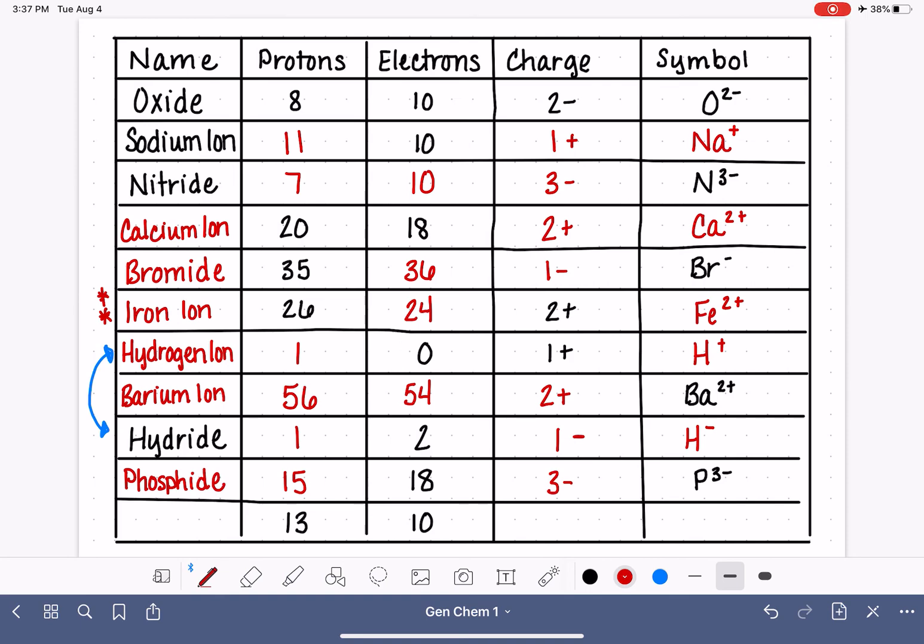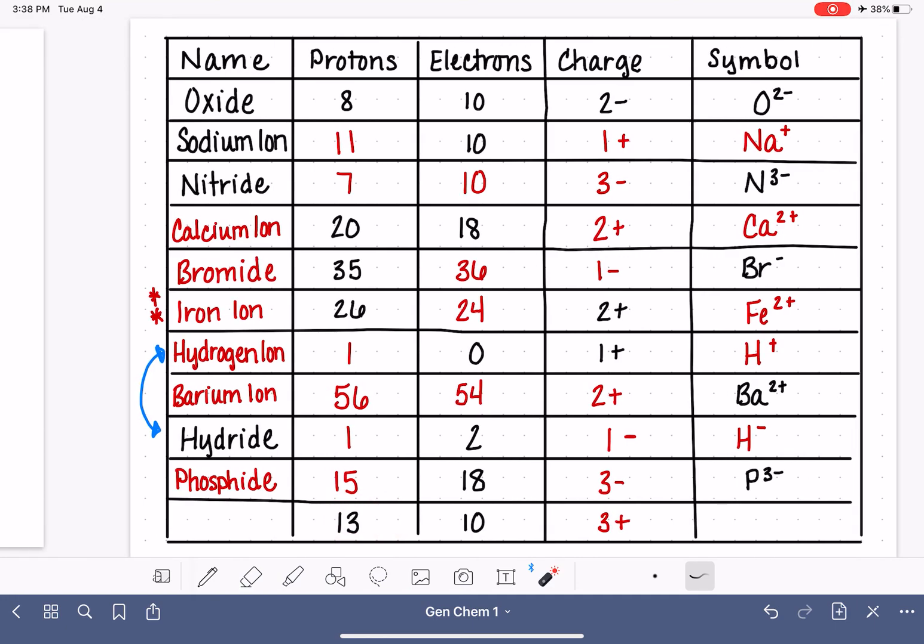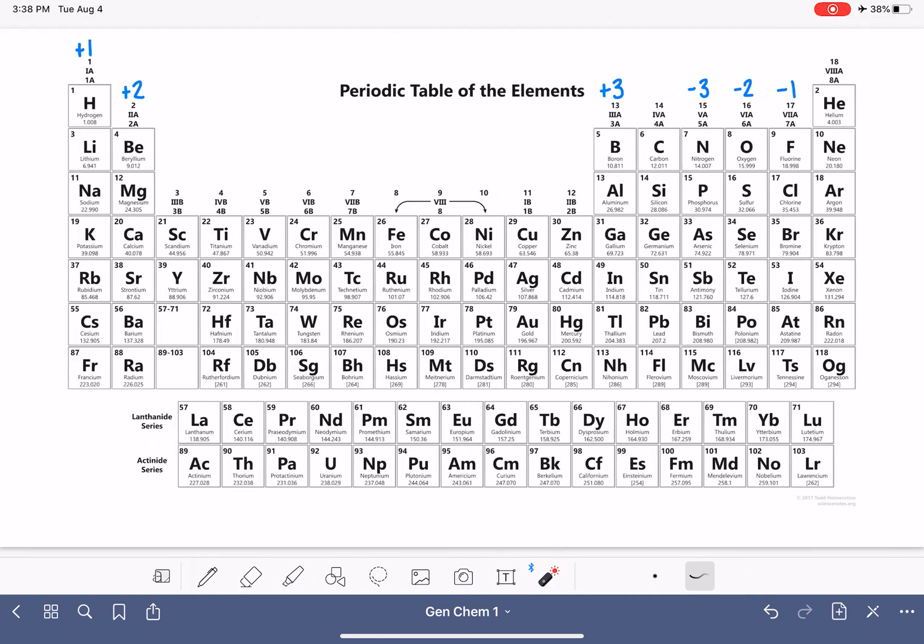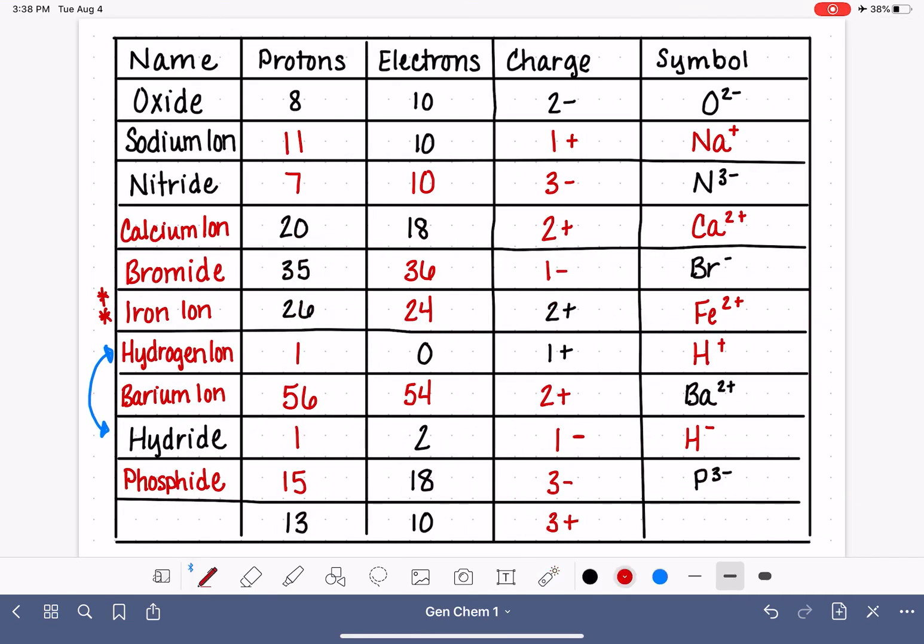Remember, for the negatively charged ions, we change the ending of the atom's name to ide. And here's our last example. 13 protons with 10 electrons. That is a 3 plus charge. Who is this atom? Let's go find 13 protons on the periodic table. 13 is aluminum. So our symbol is Al 3 plus. And this guy's name is aluminum ion.